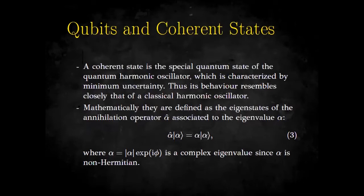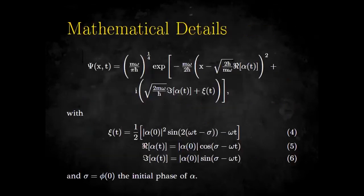The coherent state is a special quantum state, very important in quantum optics, of the quantum harmonic oscillator, characterized by minimum uncertainty — the product ΔH times ΔP is minimum — so that its behavior closely resembles that of a classical harmonic oscillator. Mathematically, coherent states are defined as eigenstates of the annihilation operator A with eigenvalue α, where α is a complex number since operator A is non-Hermitian. Here is the wave function we are working with, which will be inserted into the Bohmian equations to obtain the subsequent trajectories.